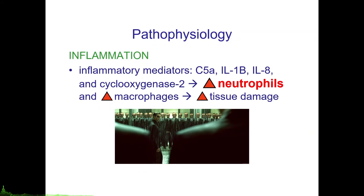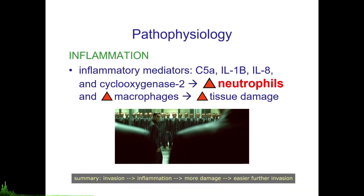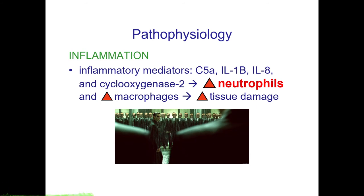The next step in pathogenesis is the inflammatory reaction. Upon invasion, inflammatory mediators are released by the body including C5a, interleukin-1β, interleukin-8, and cyclooxygenase-2, which increases neutrophil counts and increases the mobility of macrophages towards the site of infection. These inflammatory reactions increase tissue damage, which eventually leads to more Entamoeba histolytica being able to penetrate through the damaged tissues. For some unknown reason, Entamoeba histolytica is resistant to the oxidative burst associated with neutrophils and macrophages.